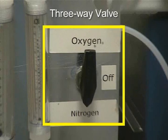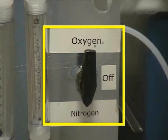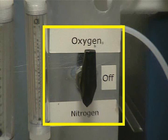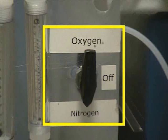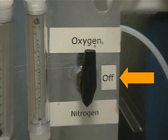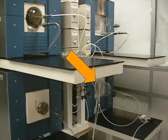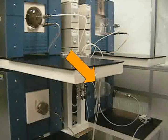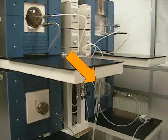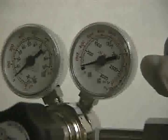Just to the right of the flow meters is a three-way valve. This valve controls which gas flows into tube two. The two selectable gases are oxygen and nitrogen. The narrow end of the handle should point to the gas chosen to be used. When tube two is not in use, the valve should be turned off. When you use furnace tube two, which performs oxidation, you must make sure that the oxygen cylinder in the chase behind the Lindbergh Furnace is on.